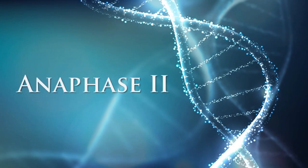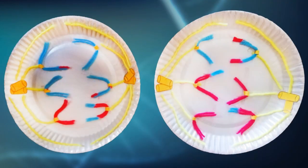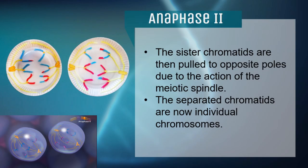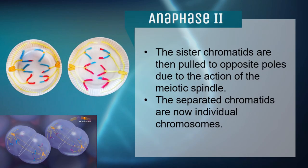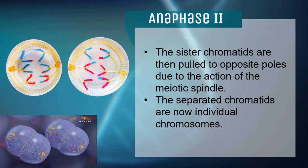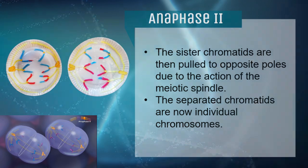Nearly at the end, we have Anaphase II. Here we present a visual guide of how Anaphase II looks. The sister chromatids are pulled away from each other by the action of the meiotic spindle and are pulled to different poles of each cell, which now makes them single chromosomes.